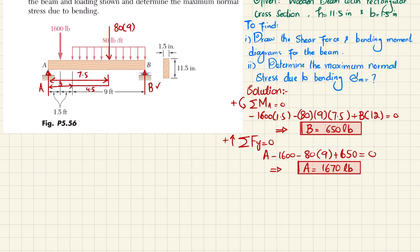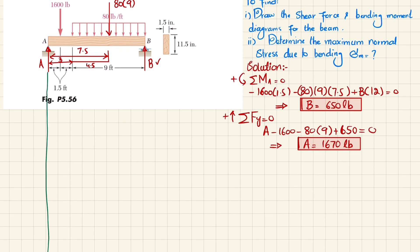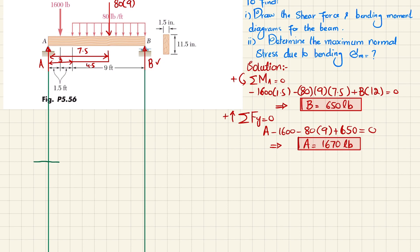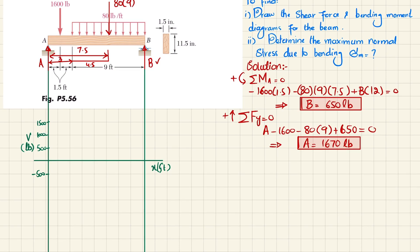Now we have both reactions, so we will draw the shear force and bending moment diagrams. Take vertical lines from the ends of the beam and a horizontal line showing length x in feet. The vertical axis shows shear force V in pounds. Setting each division as 500 pounds: 500, 1000, 1500 upward, and minus 500, minus 1000 downward. At point A, the shear force is 1670 pounds.